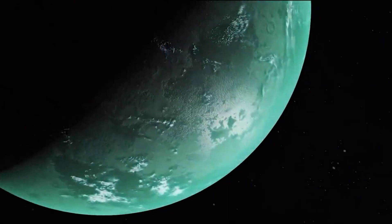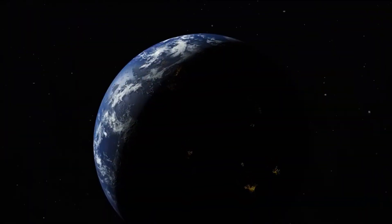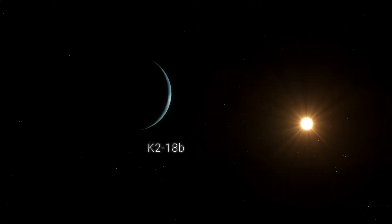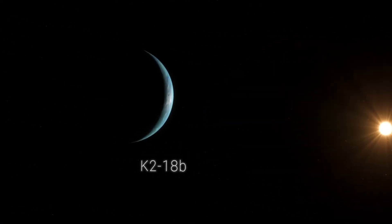Meet K2-18b, a distant exoplanet that has suddenly found itself at the forefront of astrobiological research. Why? Because James Webb discovered something unusual in its atmosphere, something that could potentially signal the existence of life.